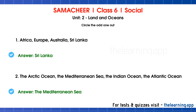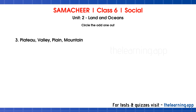The next question is an odd-one-out: plateau, valley, plain, and mountain. The odd one is valley. Plateau, plain, and mountain are second order landforms, whereas valley is a third order landform. That is why valley is the odd one out.